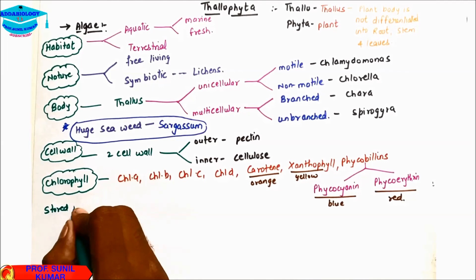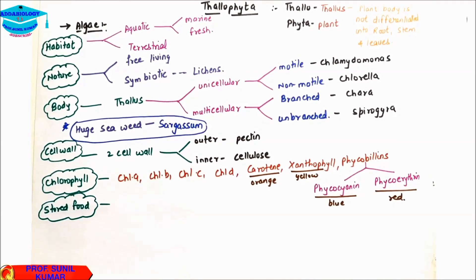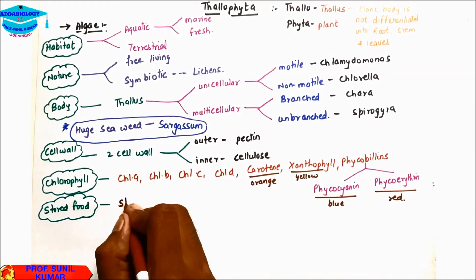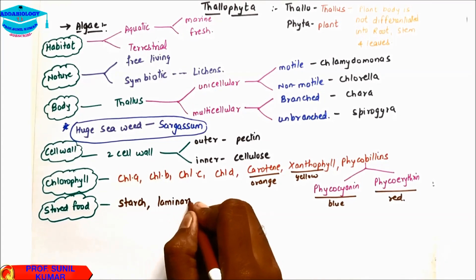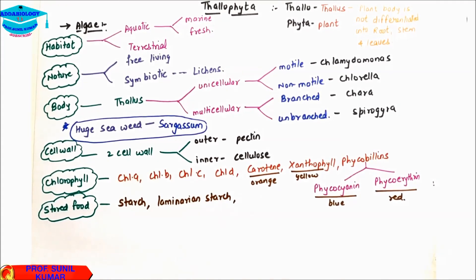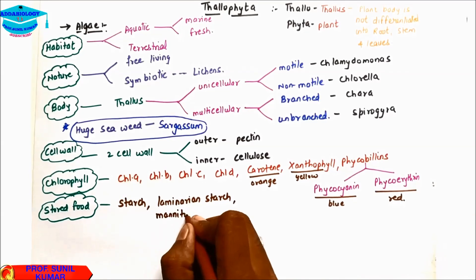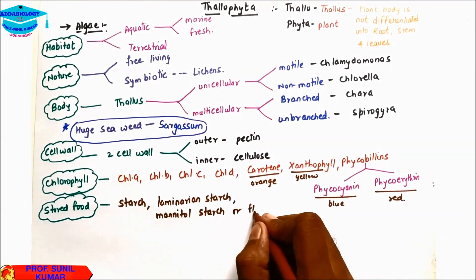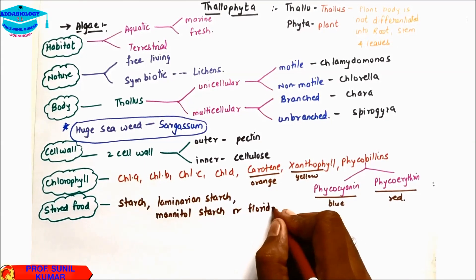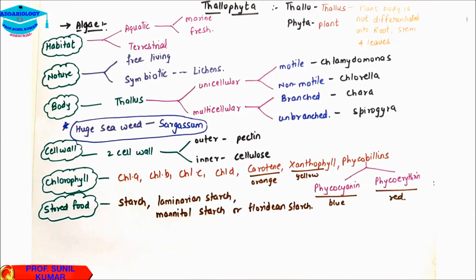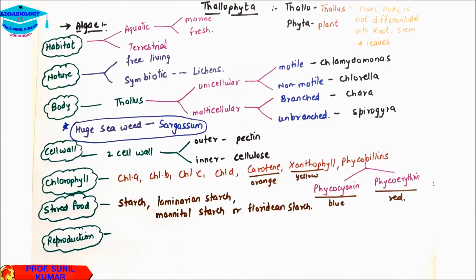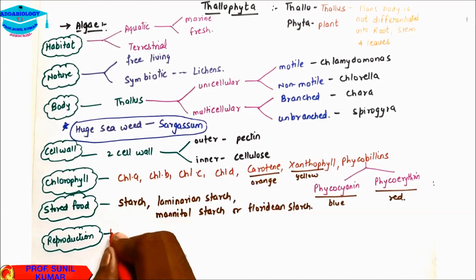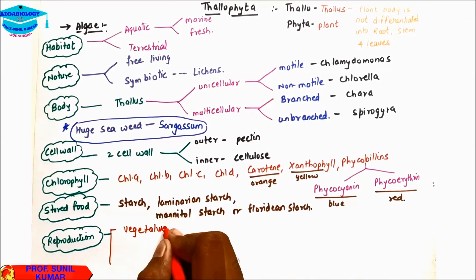The stored food in algae is mainly starch. It can be laminarian starch, mannitol starch, or floridian starch — so there are three types of starch found in algae. Algae reproduce by three different methods: vegetative reproduction, asexual reproduction, and sexual reproduction.